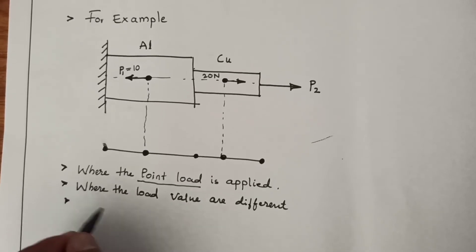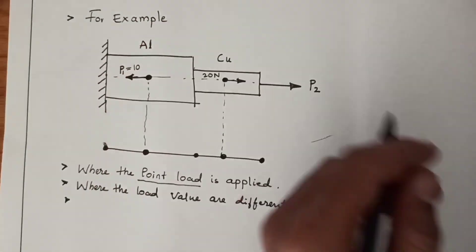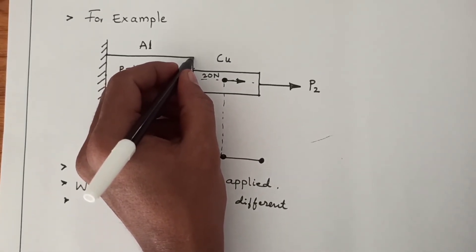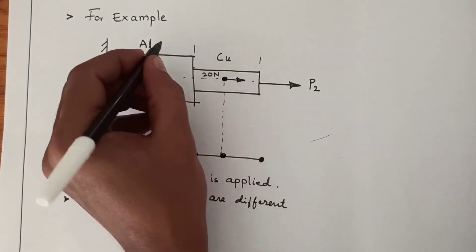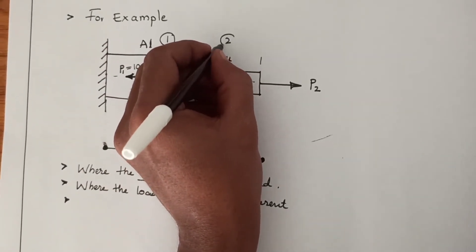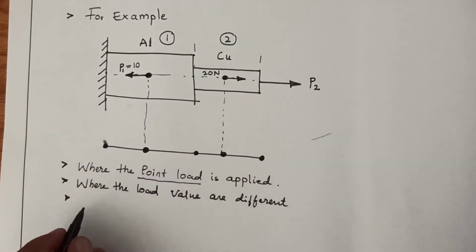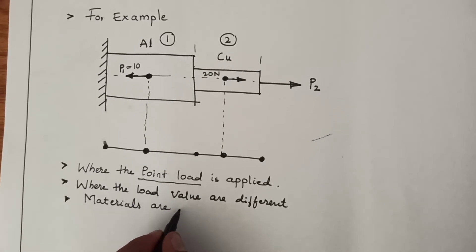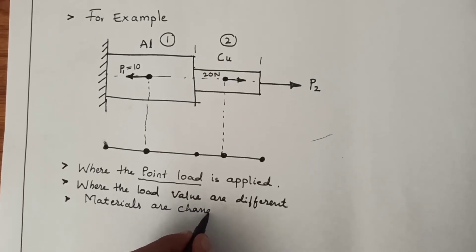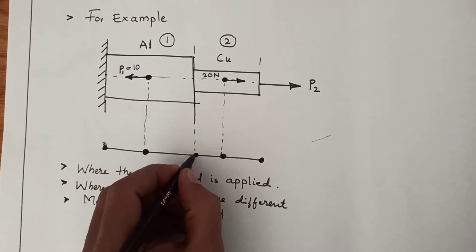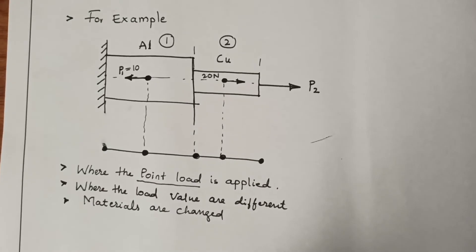Third one, when the materials are changed. So from here to here there is one element and from here to here another element. Let us say this is element 1, this is element 2. It means when the materials are changed, here at this point there should be one more node.